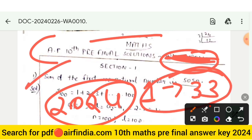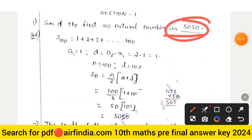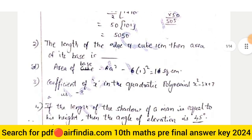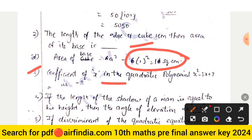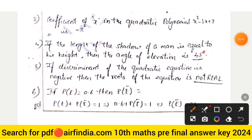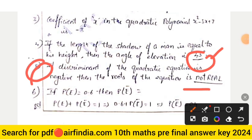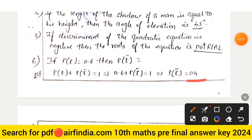Your first answer is 5050. The second answer is base area: 1 square centimeter. The third answer — coefficient of x — is minus 3. The fourth answer is 45 degrees. The fifth answer is not real, and the sixth question answer is 0.4.